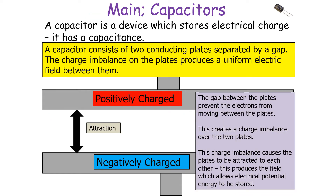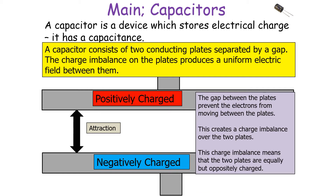A capacitor is a device which stores electrical charge. It has a capacitance. A capacitor consists of two conducting plates separated by a gap. The charge balance on the plates produces a uniform electrical field between them. The gap between the plates prevents the electrons from moving between them, creating a charge imbalance over the two plates. This charge imbalance causes the plates to be attracted to each other, and this produces the field which allows electrical potential energy to be stored in the capacitor.